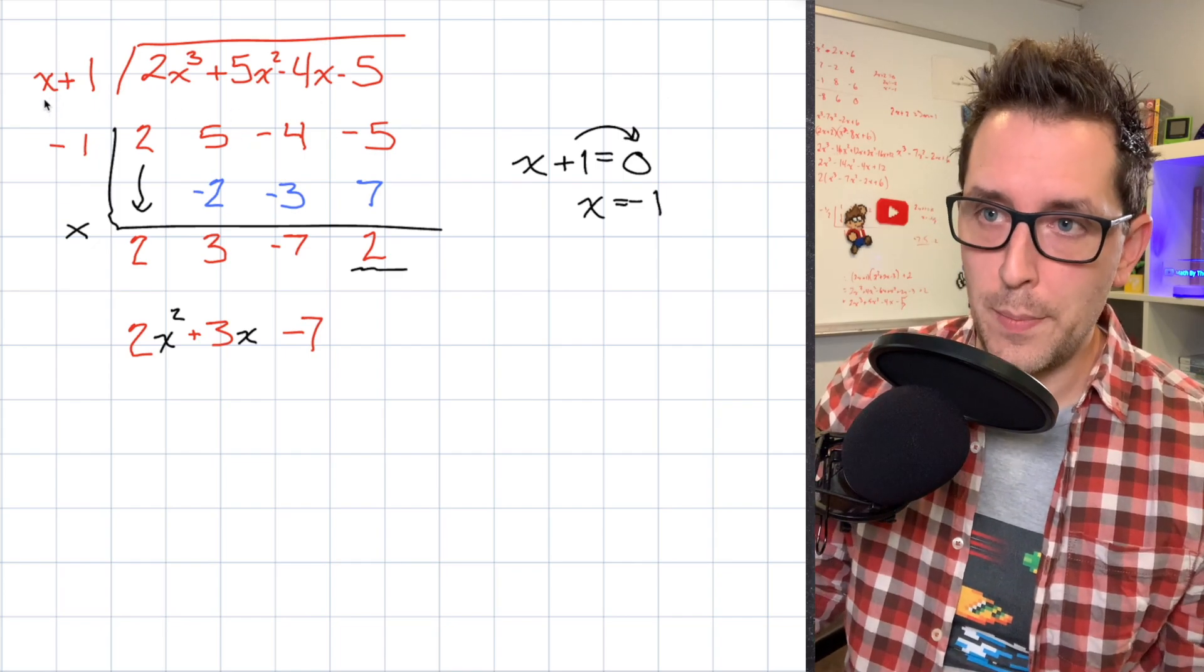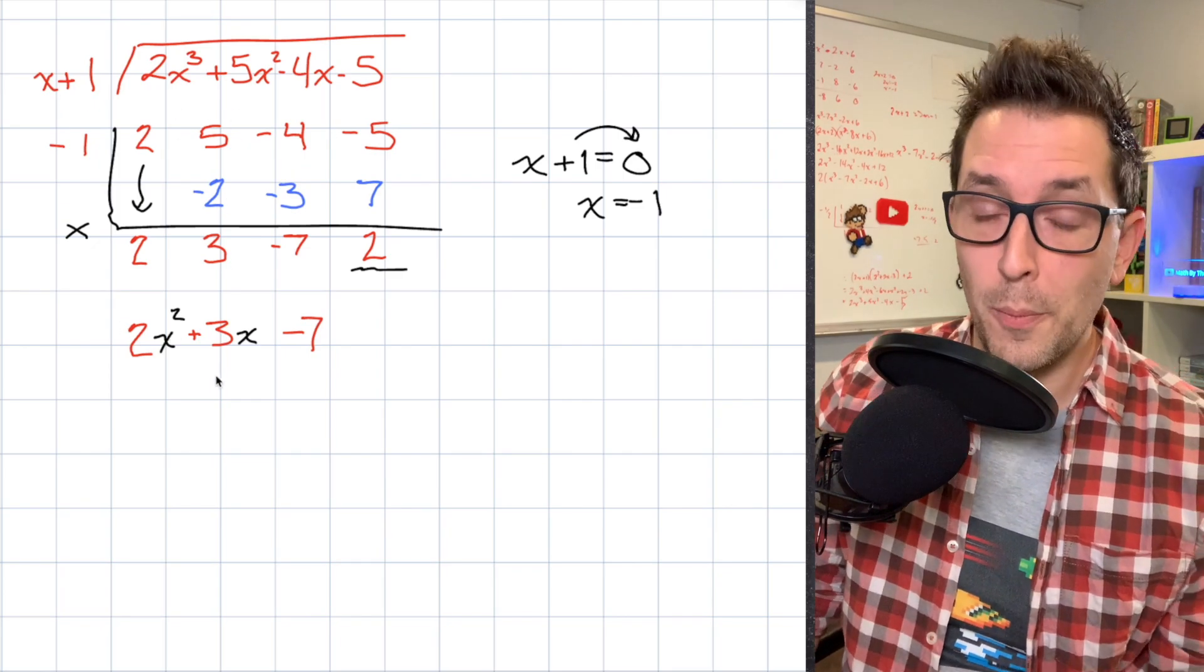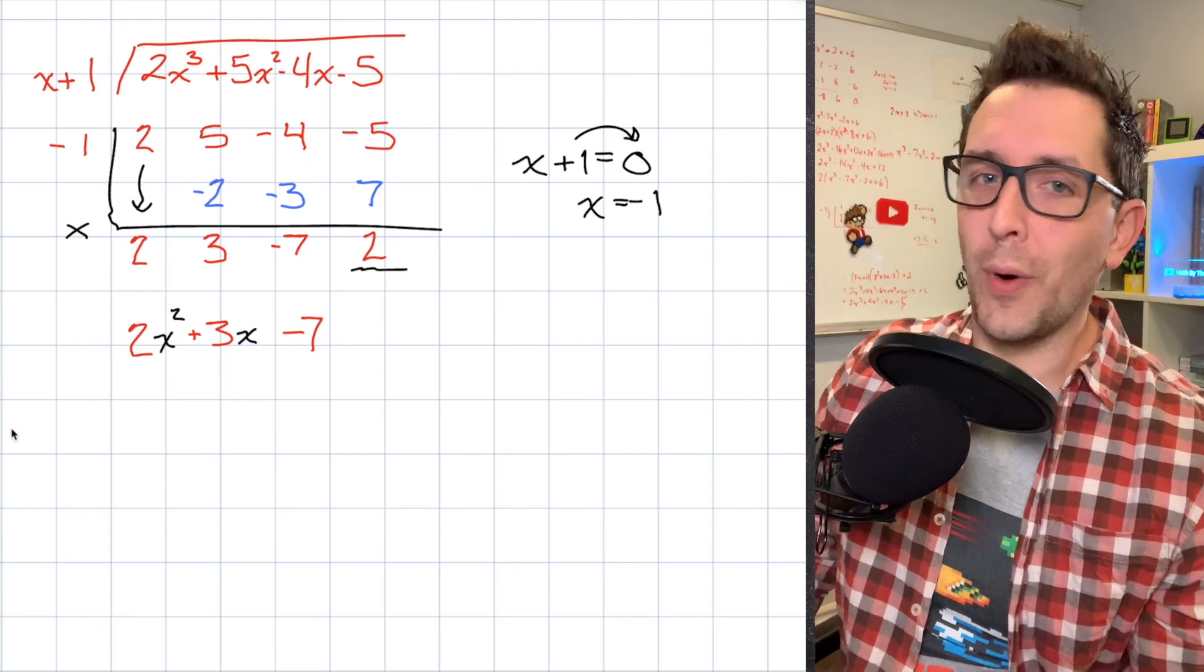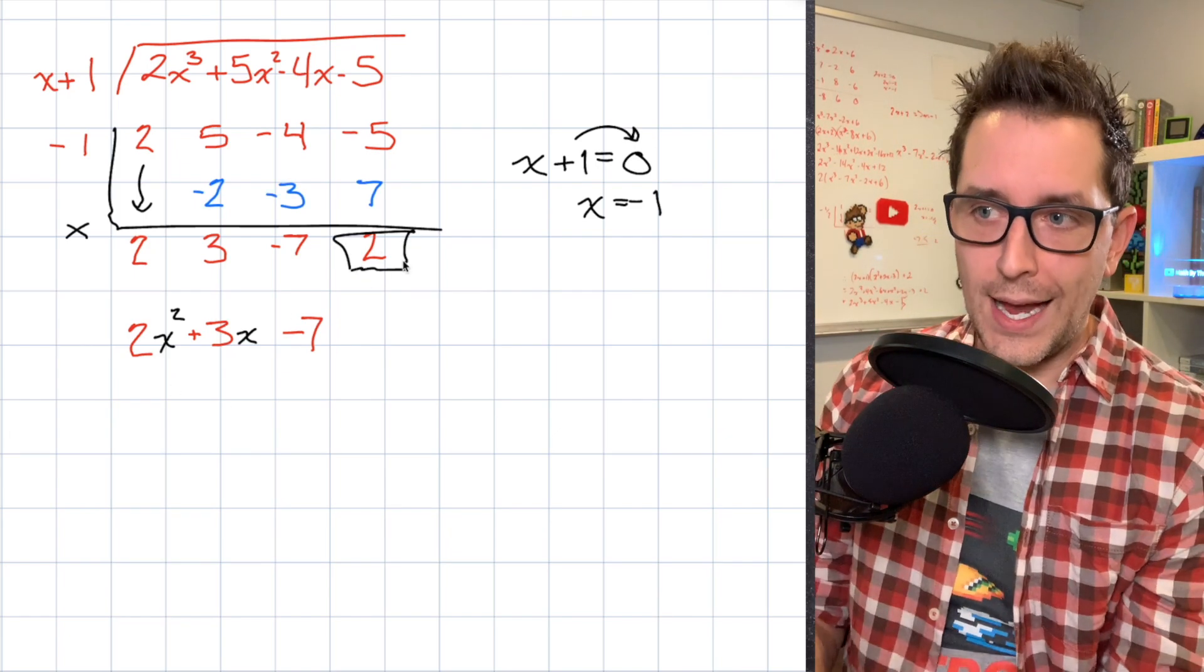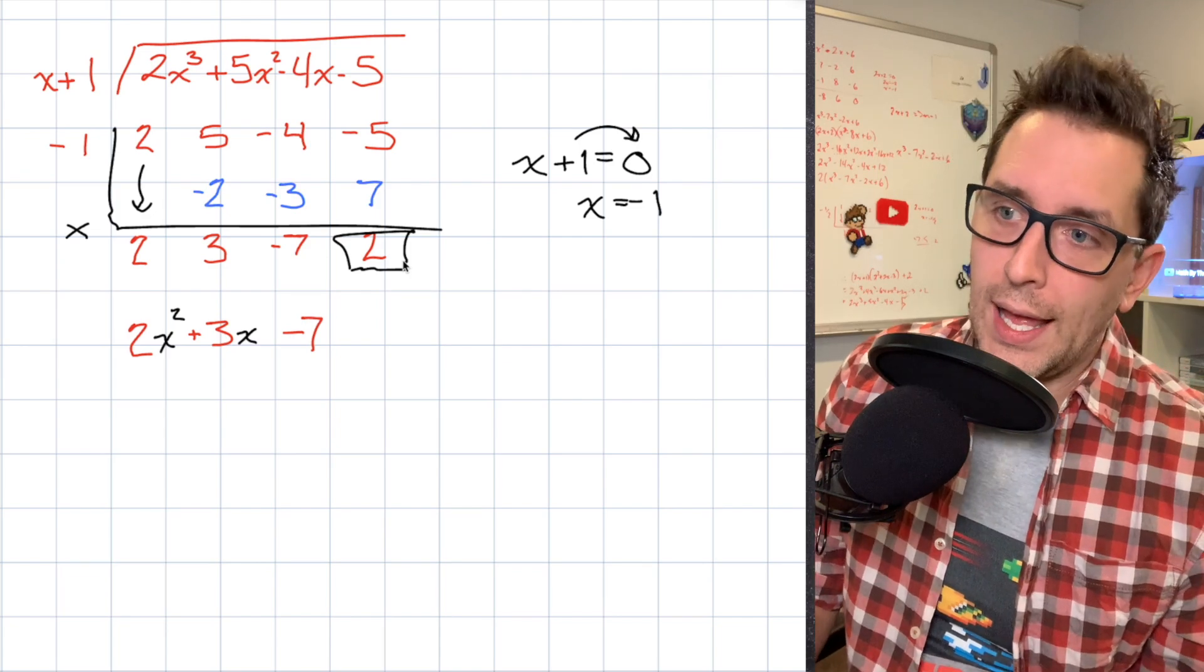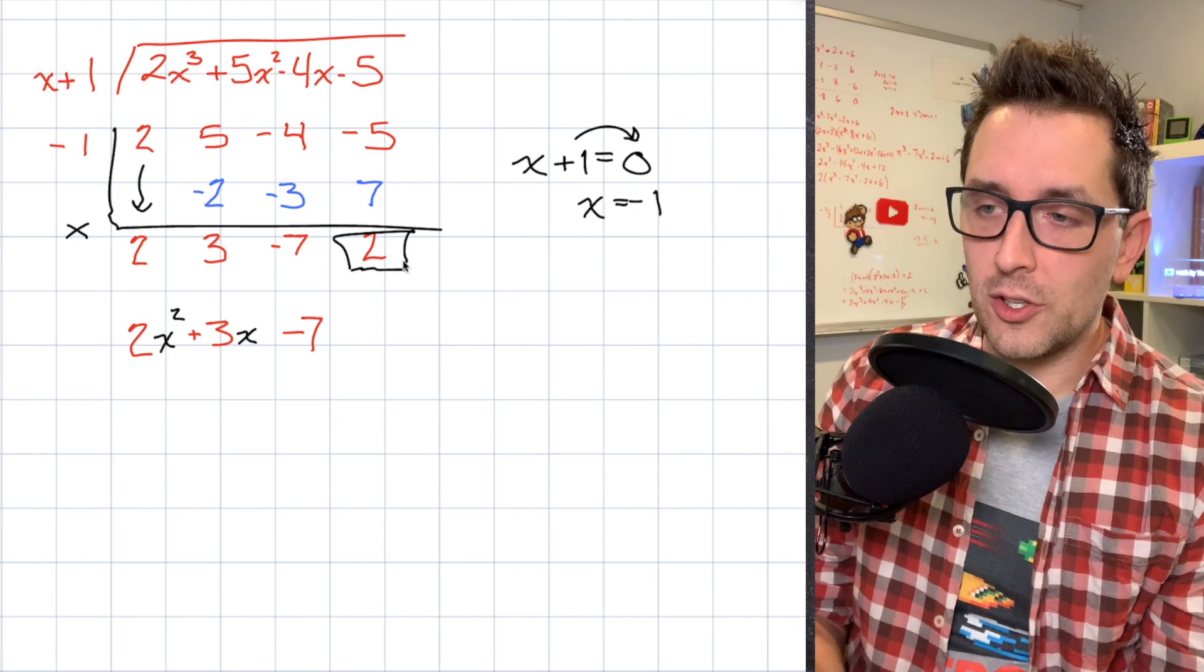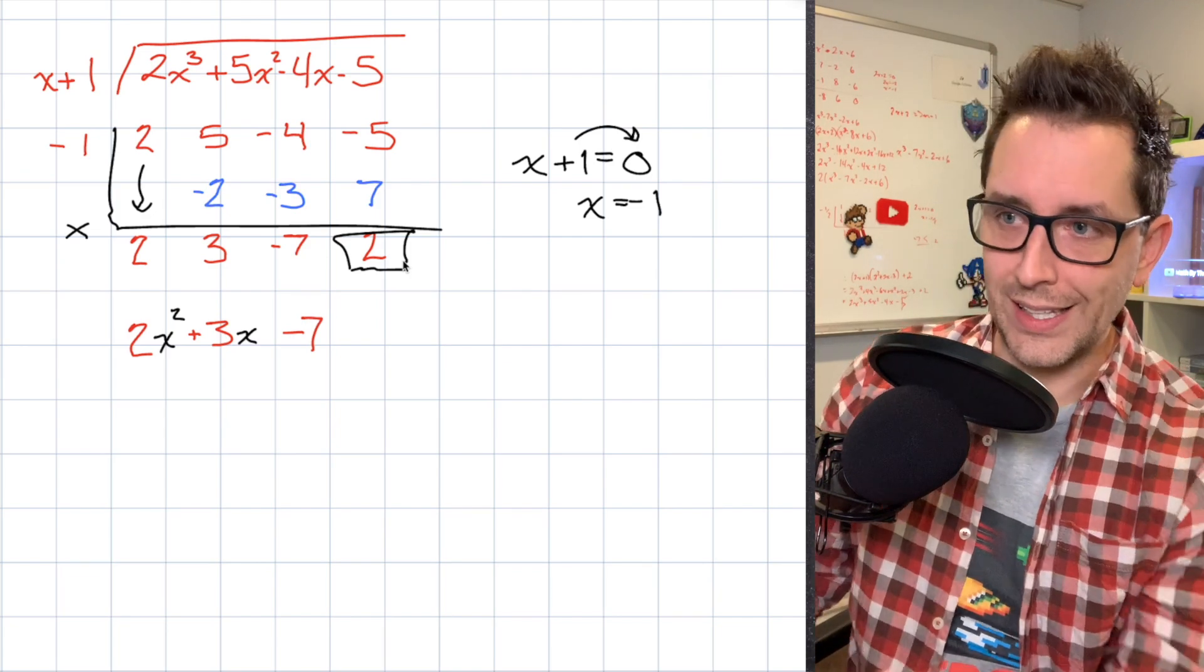When I take this polynomial, divide by that binomial, I get this trinomial. But there is a catch here. And that's why you're watching this video. What is going on with this 2? Well, this 2 right here is actually going to be our remainder. And I want to show you a way that we can communicate that remainder without just kind of leaving it hanging there.